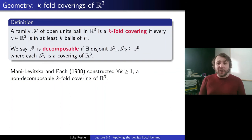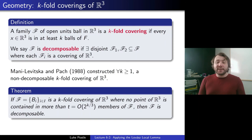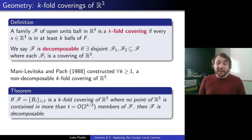So it's not always true that k-fold coverings can be decomposed. What is true — and this is also their theorem — is that if I have a k-fold covering of R³ where no point of R³ is contained in more than t members of F, where t is on the order of 2^(k/3), then F is decomposable. It's saying that if the covering is roughly uniform — every point covered at least k times but at most exponential in k — then you can actually decompose.